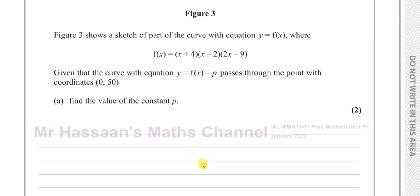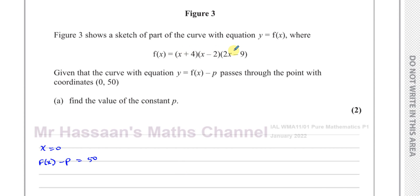So basically what they're saying here is when x equals 0, you can say f(0 minus p) is equal to 50. That's what they're saying — when you substitute x equals 0 into this, then f(0 minus p) is going to be equal to 50.